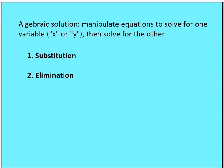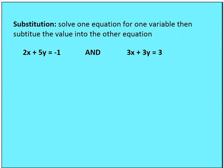Now let's talk about solving through substitution and elimination. An algebraic solution means we manipulate the equations to solve for one variable — x or y — and then solve for the other using substitution and elimination. In solving through substitution, we want to solve one equation for one variable, either x or y, and then substitute that value into the other equation. Let me show you how that looks.